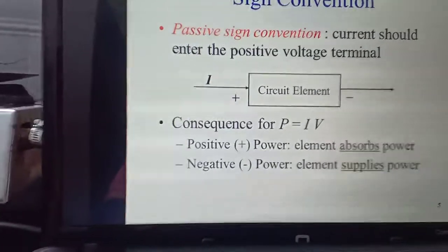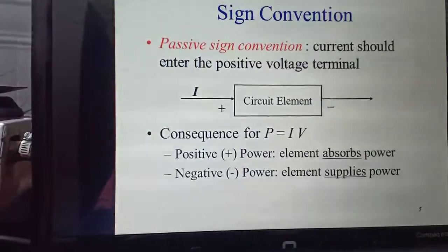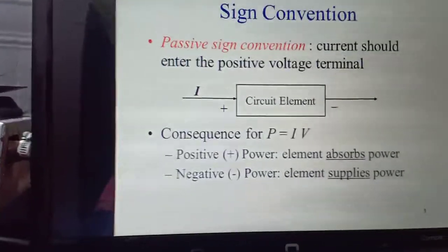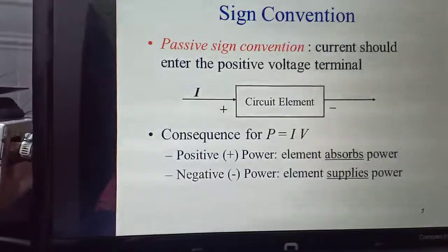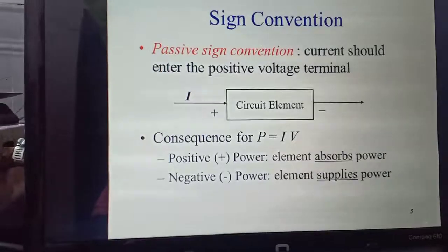Next is sign conventions. For passive sign conventions, current always enters the positive voltage terminal and leaves the negative terminal, as shown in the diagram.